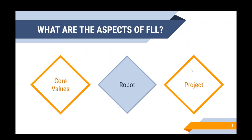FLL is very broad. There are three big aspects, however, to what it actually is: core values, robot, and project. All of those tie into FLL together, and we'll dive into the specifics of the aspects throughout the camp. But today we're going to focus on the robot aspect of FLL, specifically the programming part of robotics.